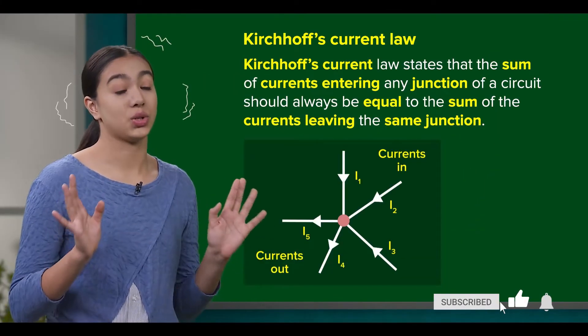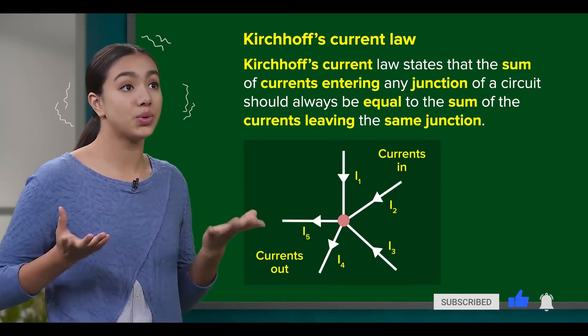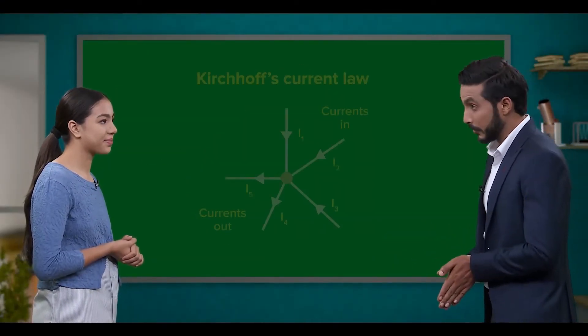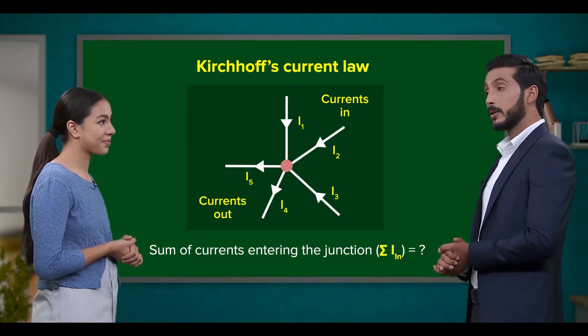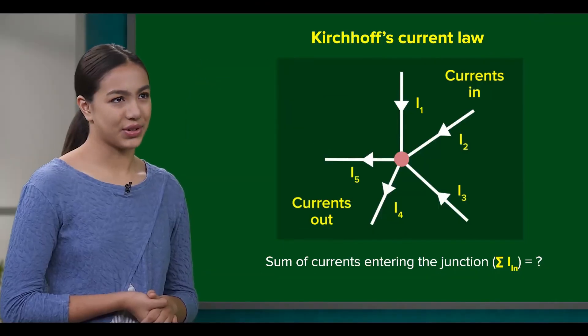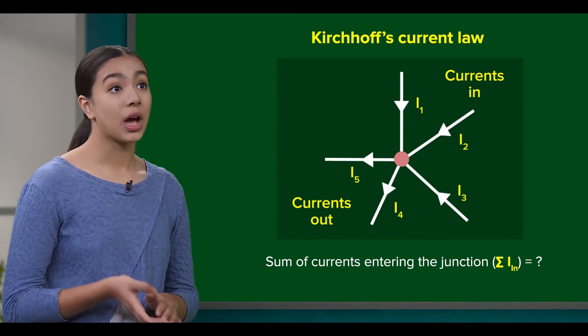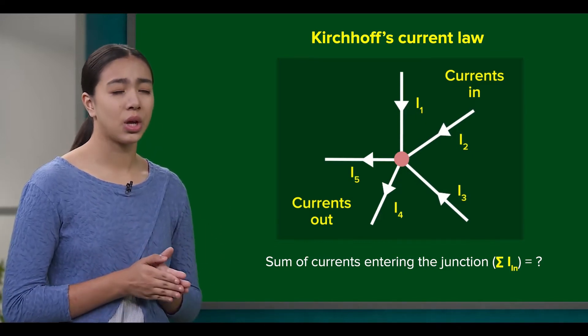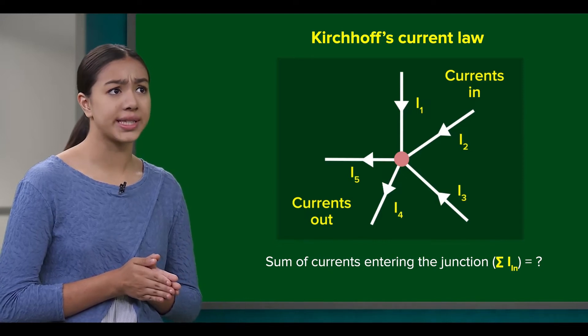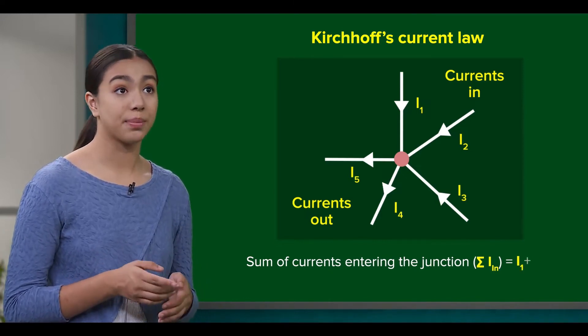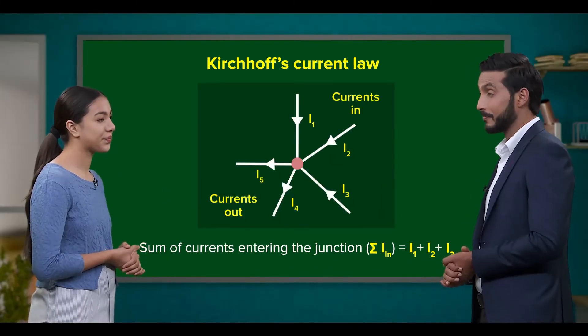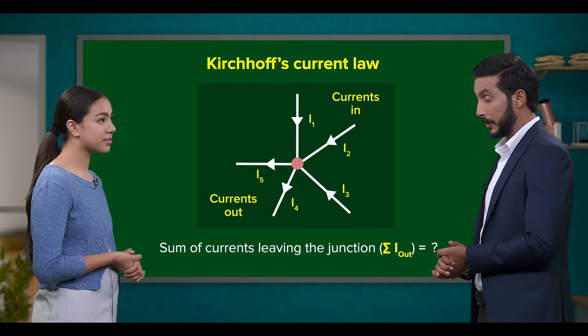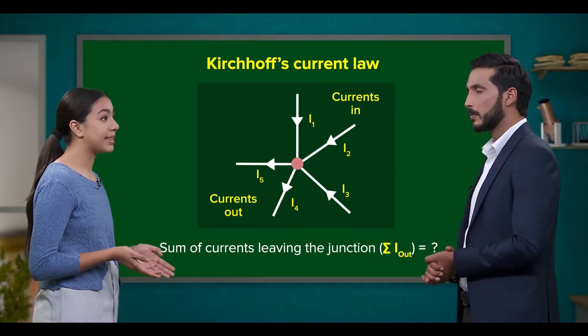There are so many currents in the diagram. Looking at their directions, currents I1, I2, and I3 are definitely heading towards the junction, so the sum of currents entering the junction should be I1 plus I2 plus I3.